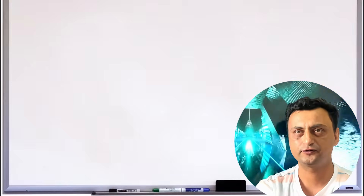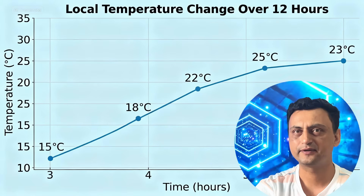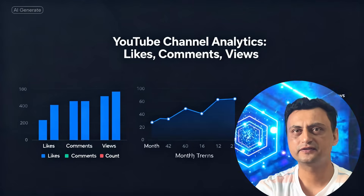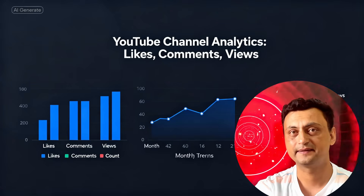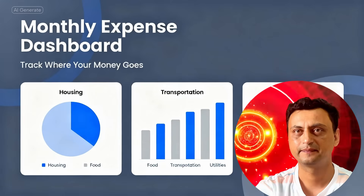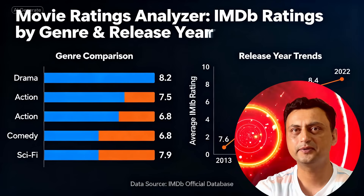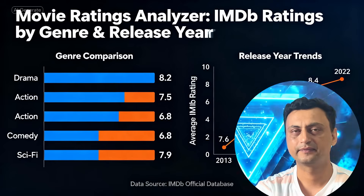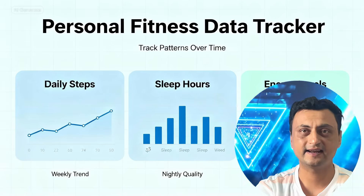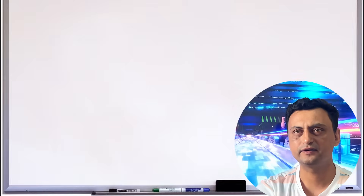Here are some easy but useful projects to help you practice. Number 1: Weather tracker — analyze local temperature changes over time. Number 2: YouTube stats project — study your channel's likes, comments, and views using analytics data. Number 3: Budget dashboard — turn your monthly expenses into charts to see where your money goes. Number 4: Movie rating analyzer — compare IMDB ratings by release year. Number 5: Personal fitness data — track your steps, sleep hours, and energy levels to find cool patterns. These projects build real confidence and help you think like a data scientist.